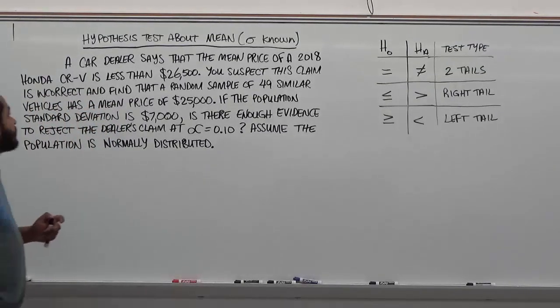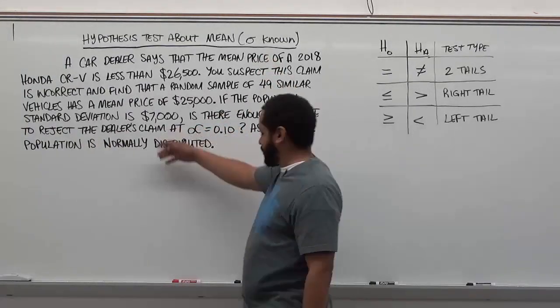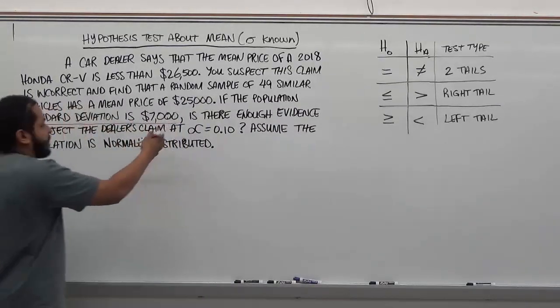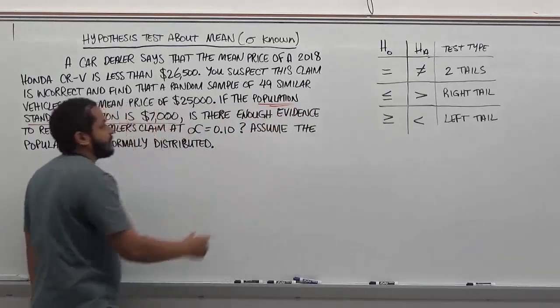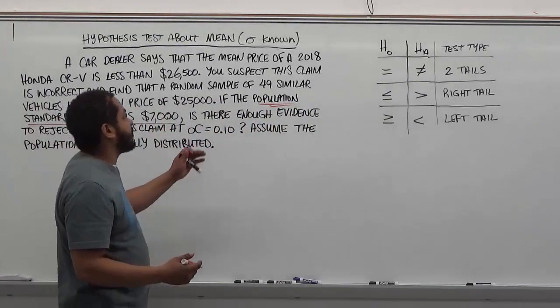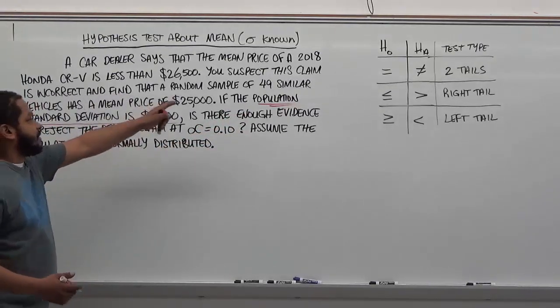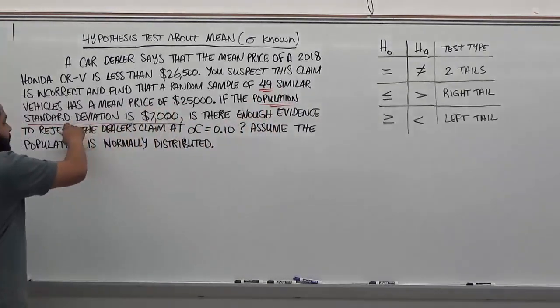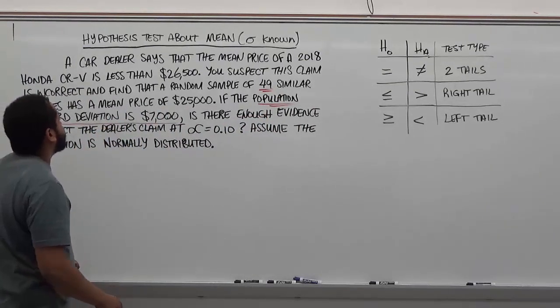In this form of hypothesis test, we know that sigma is known. Standard deviation is $7,000 and this is a population standard deviation. This makes us comfortable knowing that we can use a Z-score chart because this is normally distributed and the number of samples is 49, which paired with a population standard deviation means we're using Z-scores to identify our critical regions.